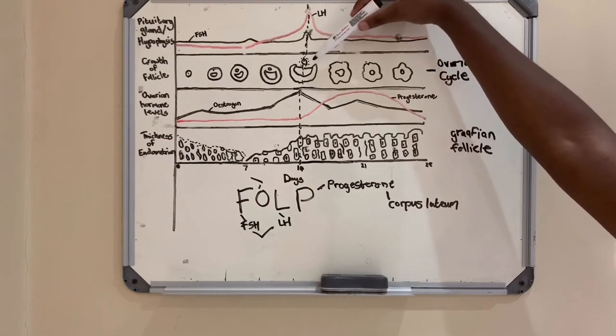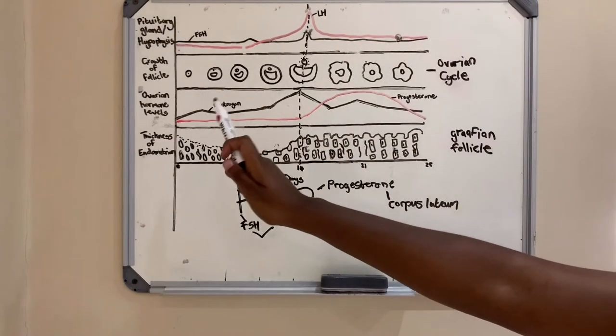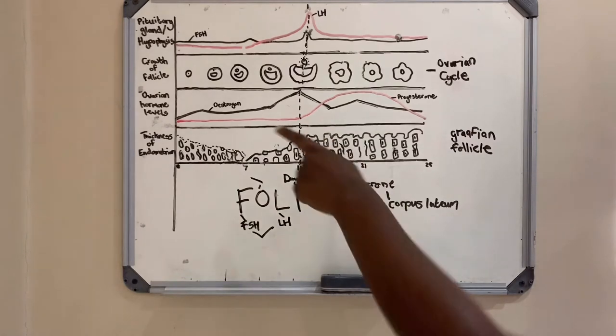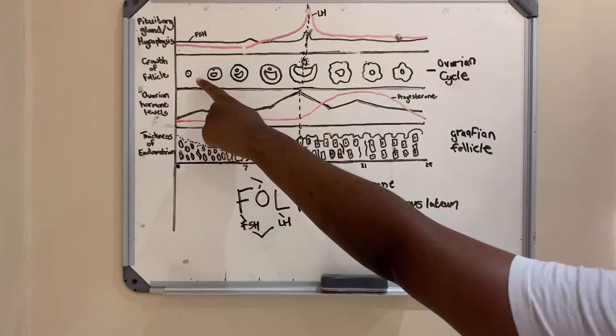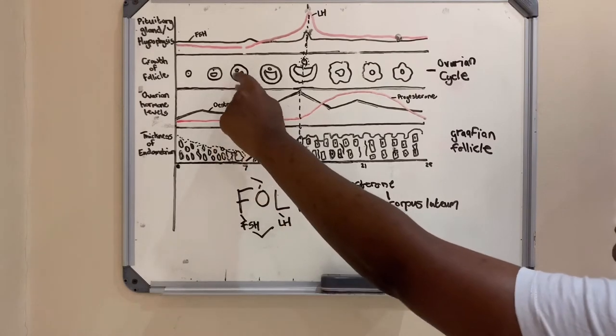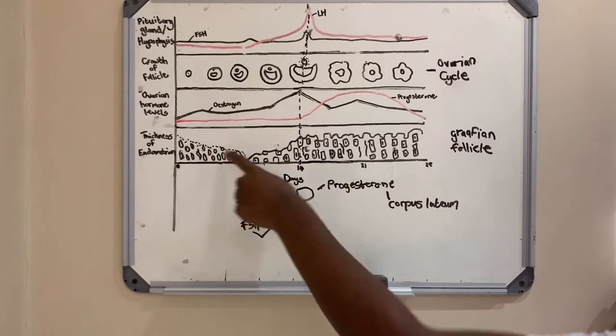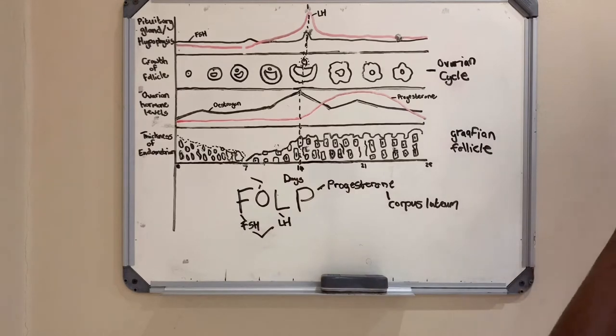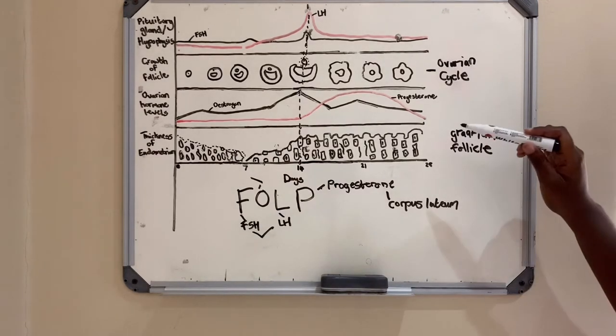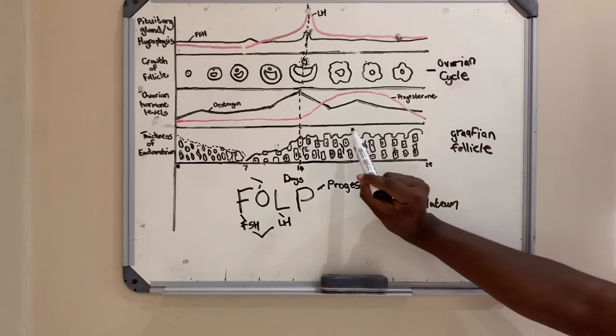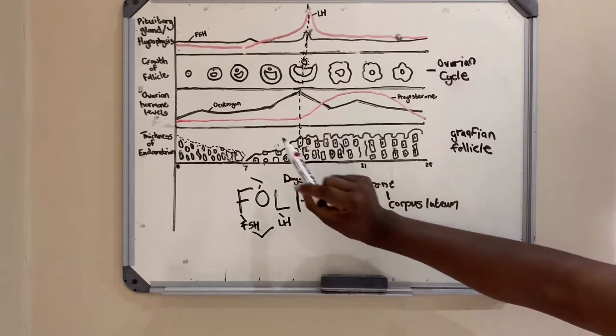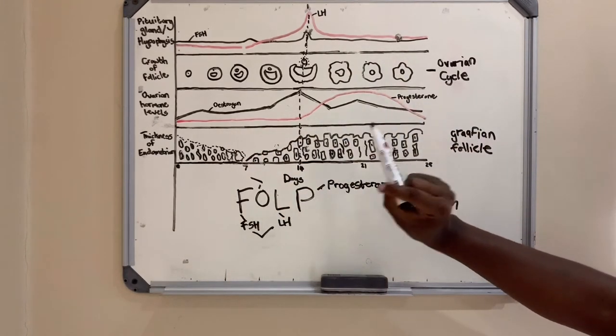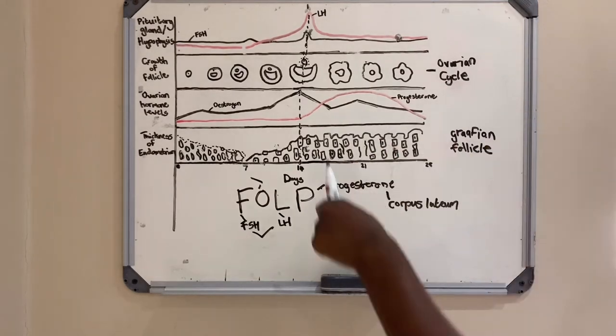As you see, the levels of estrogen are increasing, and that is because estrogen is secreted by the follicle. Estrogen plays a role in the thickening of the endometrium, and the thickening of the endometrium needs to happen so in case fertilization happens, implantation will be able to happen in the endometrium. So estrogen plays a role in the increase in the thickness of the endometrium.